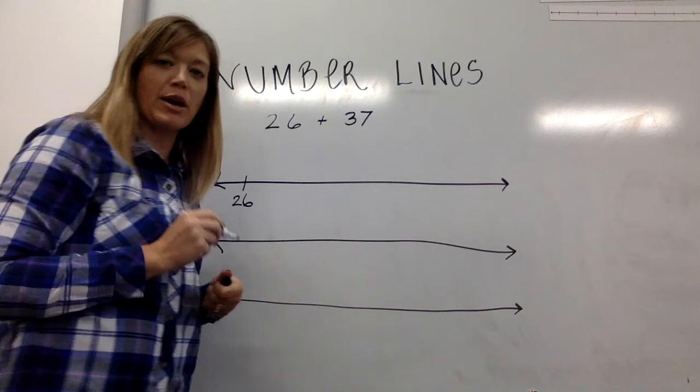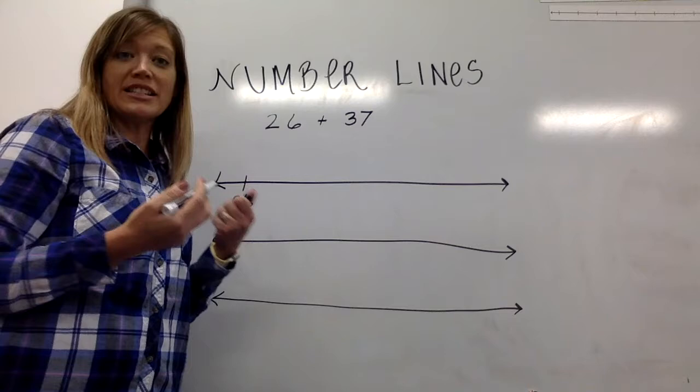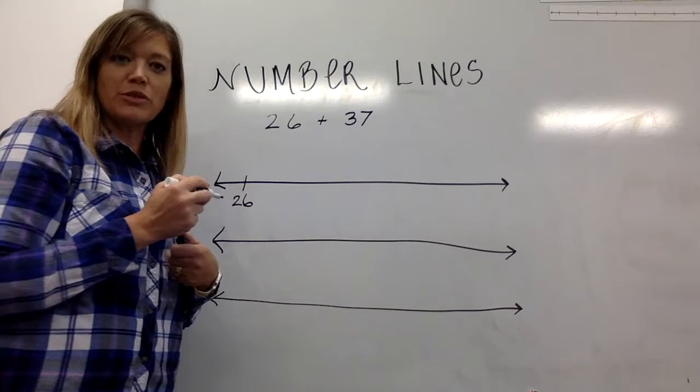I could technically make 37 individual jumps to make my way or now that I understand place value and I understand skip counting I can skip along this line to make it faster.